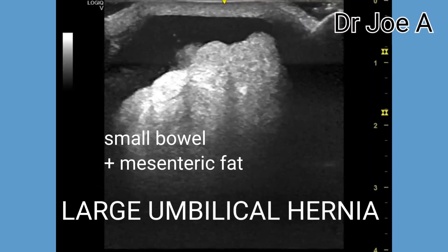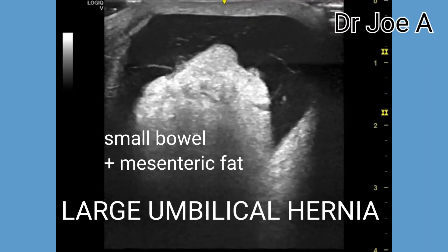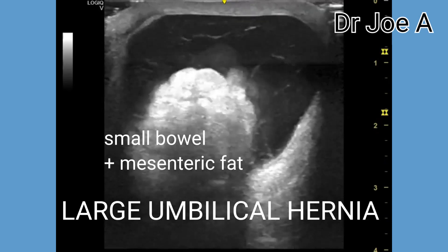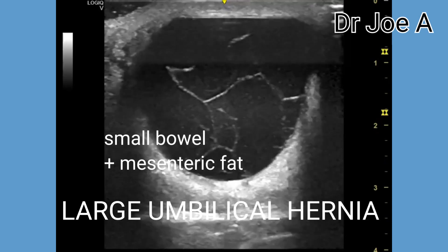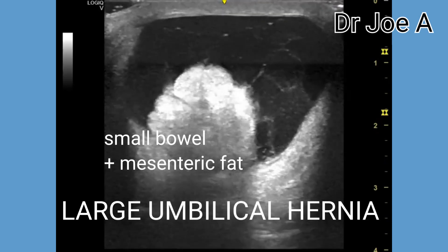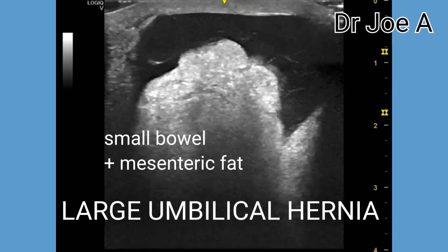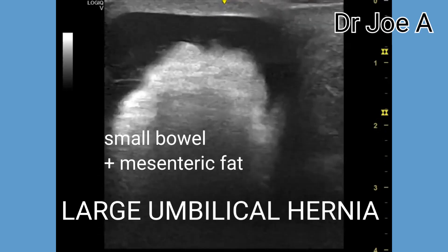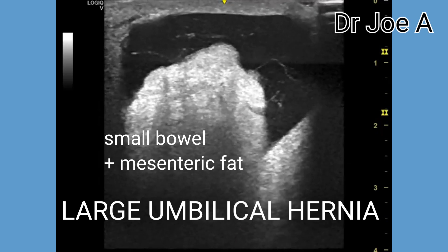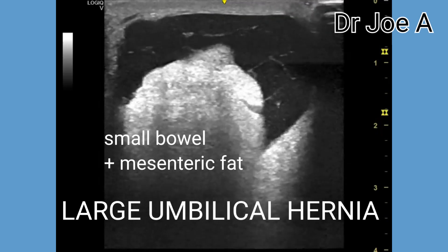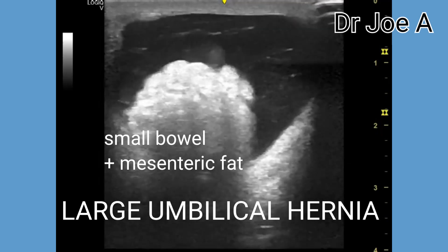Umbilical hernia is a common type of hernia that occurs when abdominal contents such as the intestines or fat protrude through a weakness or opening in the abdominal muscles around the umbilicus. Umbilical hernias can occur in both infants and adults, but they are more common in infants.